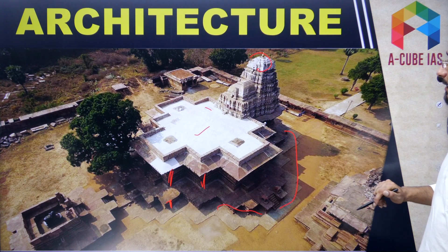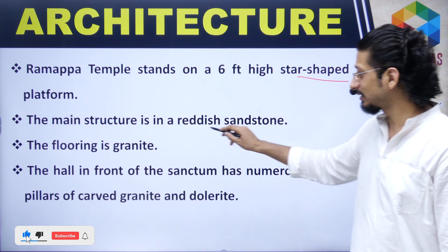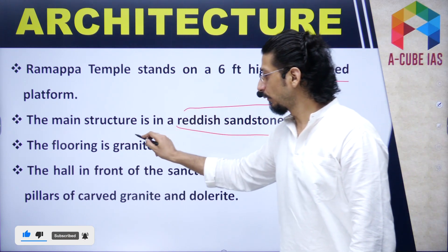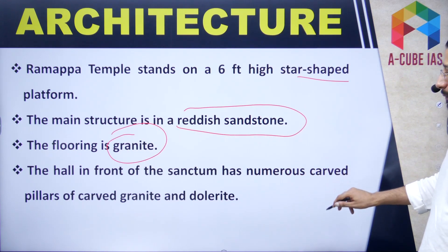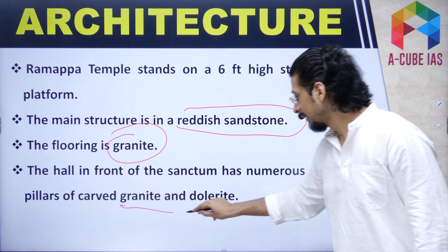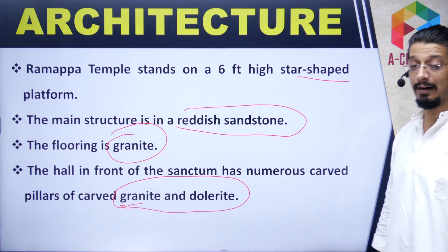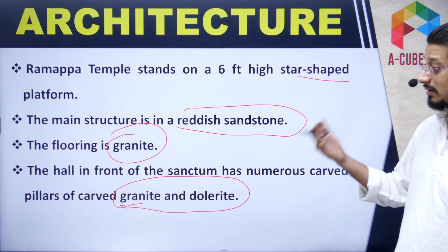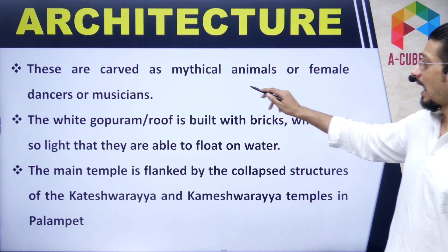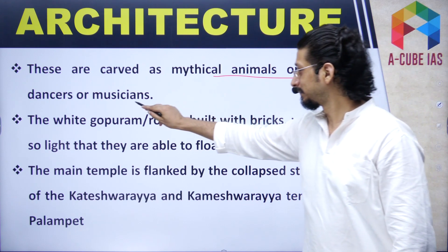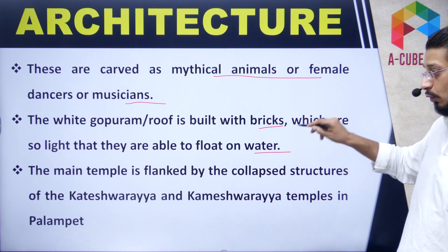The architecture features: a star-shaped high platform; the main structure is in reddish sandstone; the flooring is granite; two halls and a sanctum; numerous carved pillars of granite and dolerite — and they can ask which materials were used. These pillars are carved as mythical animals, female dancers, or musicians. The white gopuram and the roof is built with bricks so light that they are able to float on water.